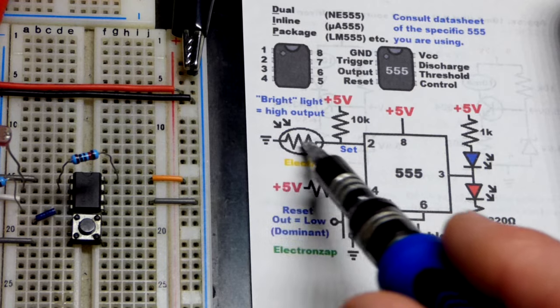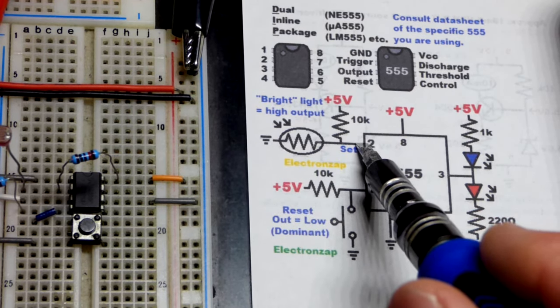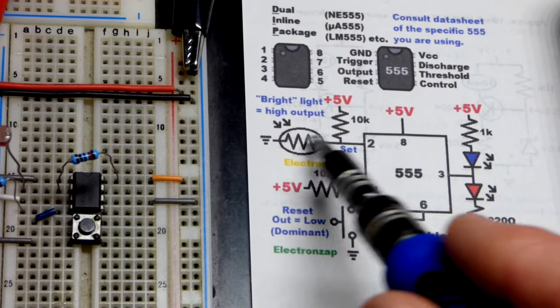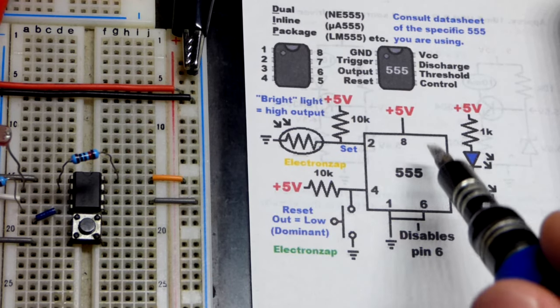The voltage actually lowers, it connects to ground better. And when it drops below one-third supply voltage because it's a voltage divider right there, then it will set the output high.